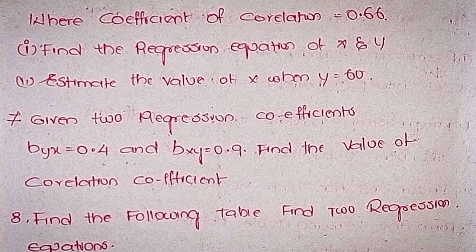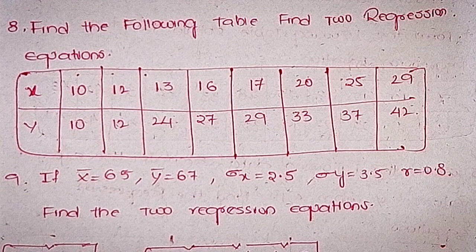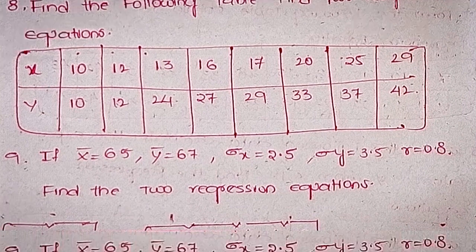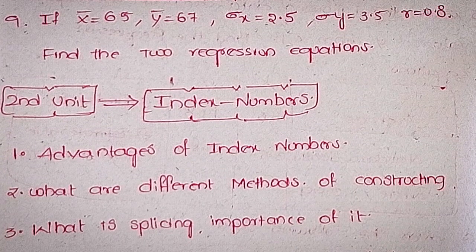Seventhly, given two regression coefficients b_yx = 0.4 and b_xy = 0.9, find the value of the correlation coefficient. Eighthly, from the following table, find the two regression equations. X values: 10, 12, 13, 16, 17, 20, 25, 29. Y values: 10, 12, 24, 27, 29, 33, 37, 42. Ninthly, if x̄ = 65, ȳ = 67, σx = 2.5, σy = 3.5, r = 0.8, find the two regression equations.